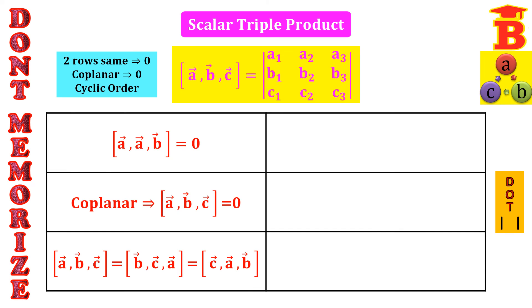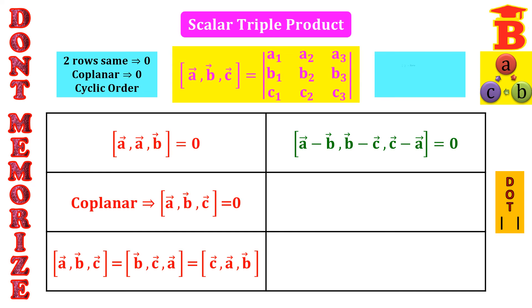In the determinant also, we can take it in cyclic order and the determinant value will be the same. So remember the cyclic order: ABC, BCA, CAB. Next result: box of [A−B, B−C, C−A] equals 0. Remember: in a box product, if we have a negative sign, then the value is 0. Note that this is in cyclic order: A−B, B−C, C−A.